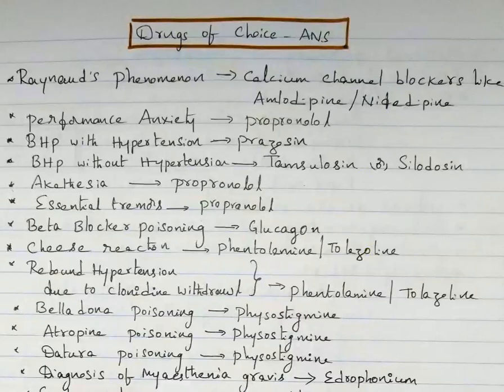Hello friends, hope you're all doing great. This video is about drugs of choice in ANS, that is autonomic nervous system. Some drug of choice can be a repeat of CNS, but I included them because it can be like a revision. Some can see only ANS video — for them it will also be useful.